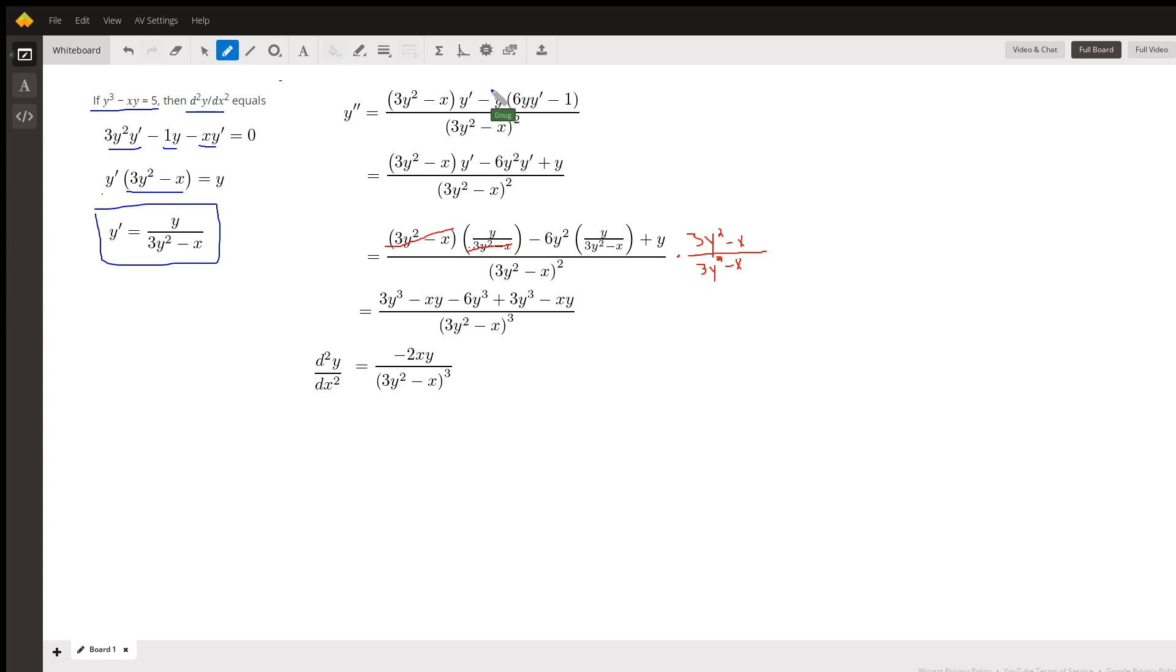We'll go ahead and distribute this y minus y times each term here. And then I'm going to replace each of these y primes with the earlier calculated expression y over 3y squared minus x. So that's what these are right here.